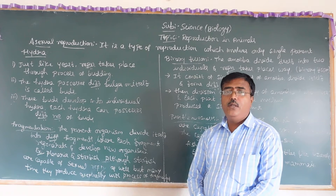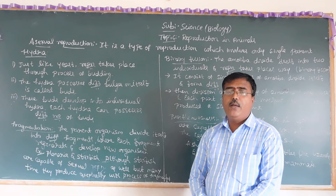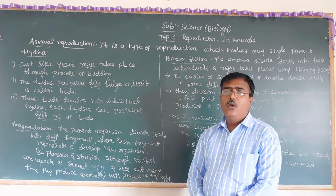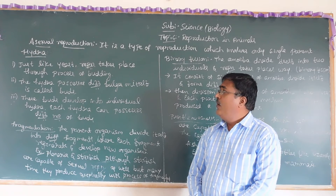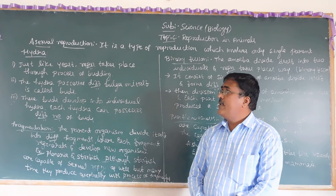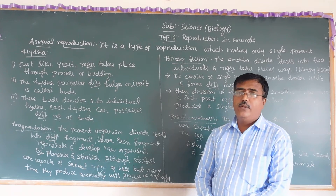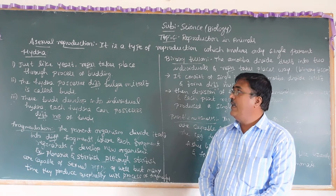In asexual reproduction, male and female gametes are not involved at all. Only a single parent is the route to reproduction. Examples can be seen in lower-form organisms.